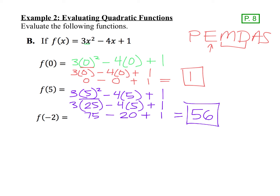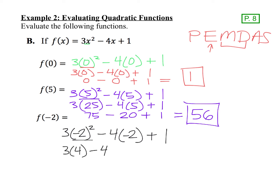For f(-2), replace all the x's with negative 2 and make sure you put parentheses around them. When you square negative 2, a negative times a negative is a positive, so I have 3 times 4. Then minus 4 times negative 2 plus 1. 3 times 4 is 12, and negative 4 times negative 2 is positive 8. Adding those together with the plus 1, we end up with an answer of 21.